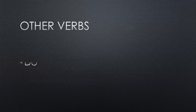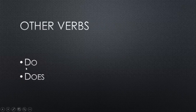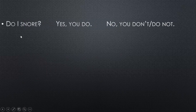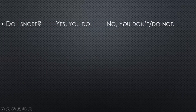Then we move on to other verbs. Depending on the subject, you are going to use do or does. To create a question, it is the same: put the auxiliary verb at the beginning, then the subject, then the base form of the main verb. Do I? Yes, you do. Or no, you don't. Or no, you do not.